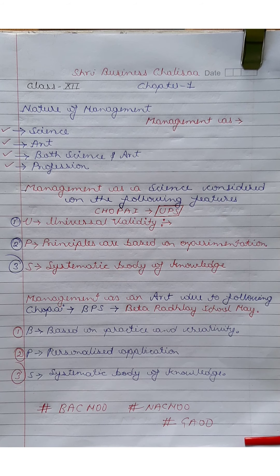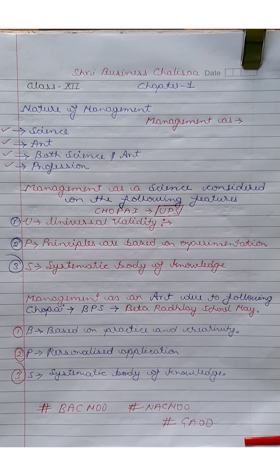Universal validity — management principles are universal but not 100% exact because management deals with human beings who have different collective habits and different conditions. So this feature — universal validity — is 50-50 for management. Similarly, Principle based on Experimentation is also 50-50. Now let's talk about Point 3 — Systematic Body of Knowledge.